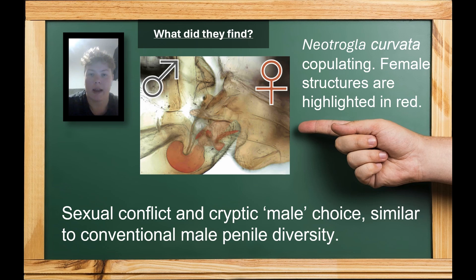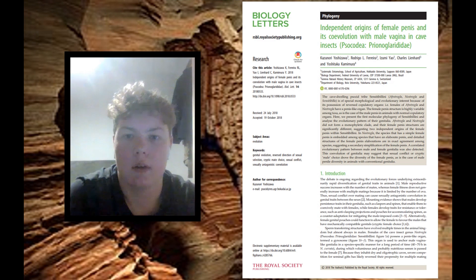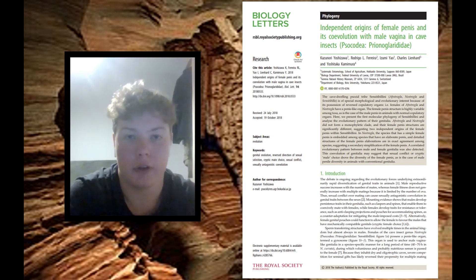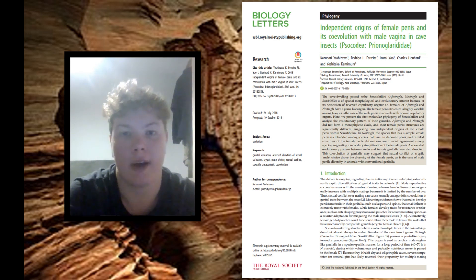Traditionally, sexual selection is associated with female choice and male competition; however, these insects challenge this. It is interesting that conventionally females with a vagina have the choice, but in this case it's the males with the vagina-like organ who have the choice of females with the best fitness. Yoshizawa et al.'s study challenges our understanding of sexual selection and underscores how sexual conflict can drive rapid diversification of genetic traits.